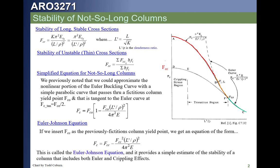We have a couple of approaches. One, we could just check both Euler buckling and crippling and report the margin of safety on whichever is most critical. Or we can plug the crippling allowable directly into this Euler-Johnson equation to get the actual compressive buckling allowable. Note there's no information about FCU in the equation, so we still need to cut off by FCU. The Euler-Johnson equation captures both crippling and buckling behavior in a single equation — and that's the beauty of it.